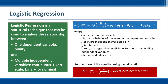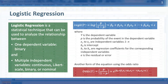If we have a nominal dependent variable with more than two levels, we can use multinomial logistic regression. This is also called a classification method because we evaluate the effects of multiple independent variables on different groups of the dependent variable.